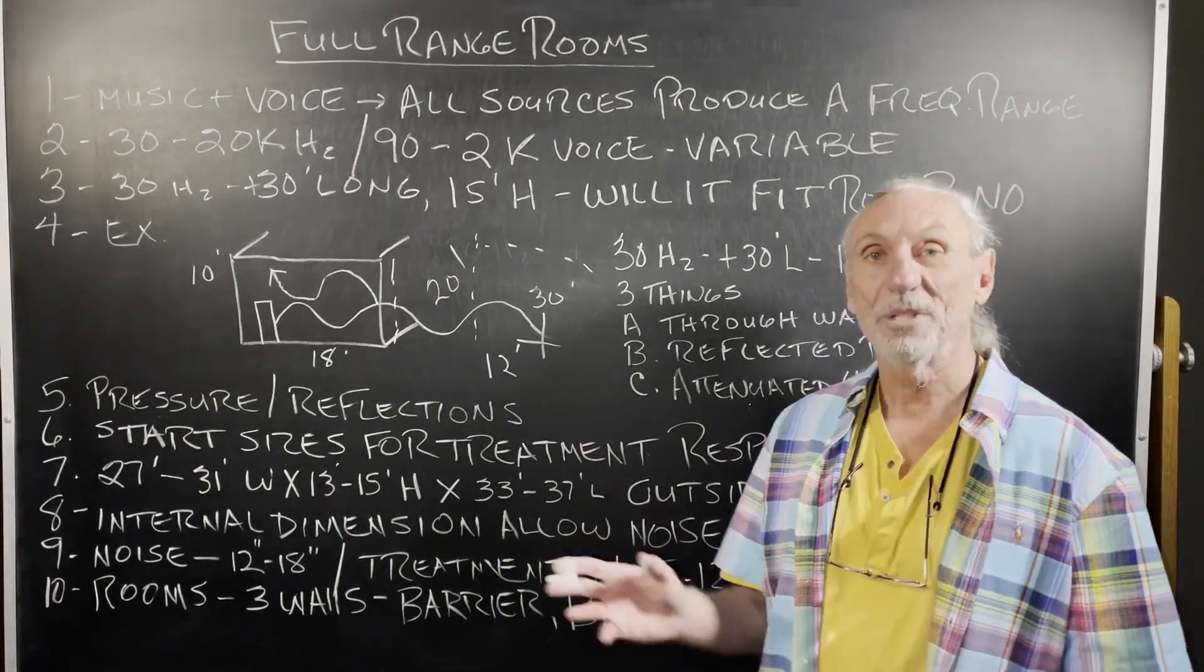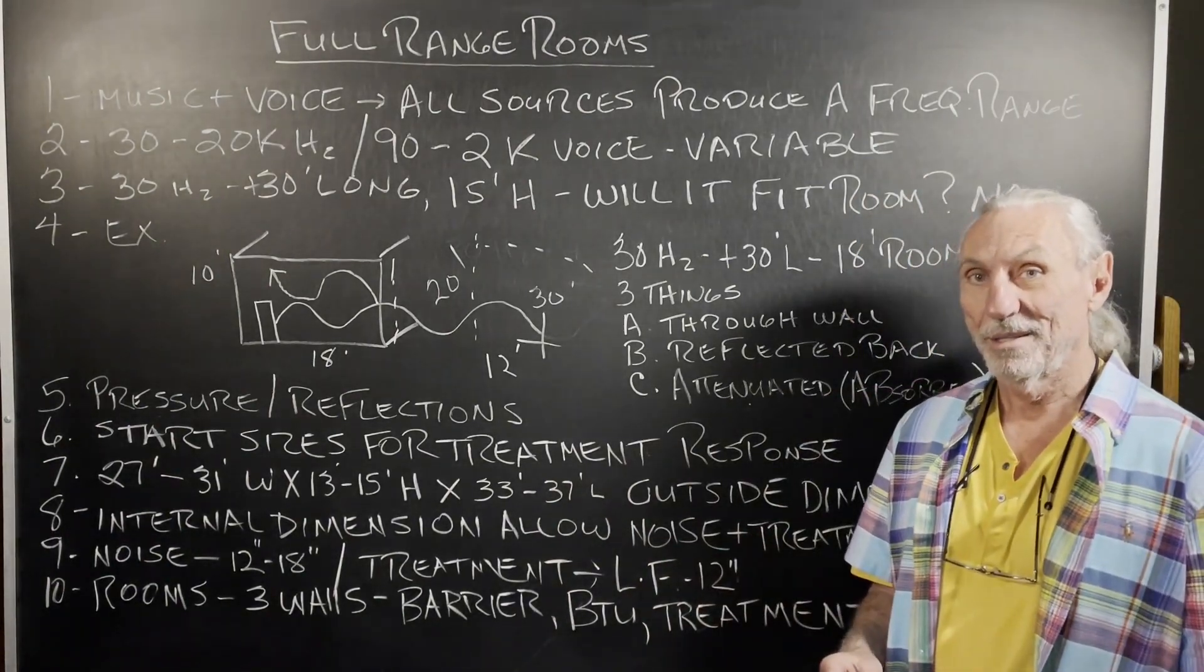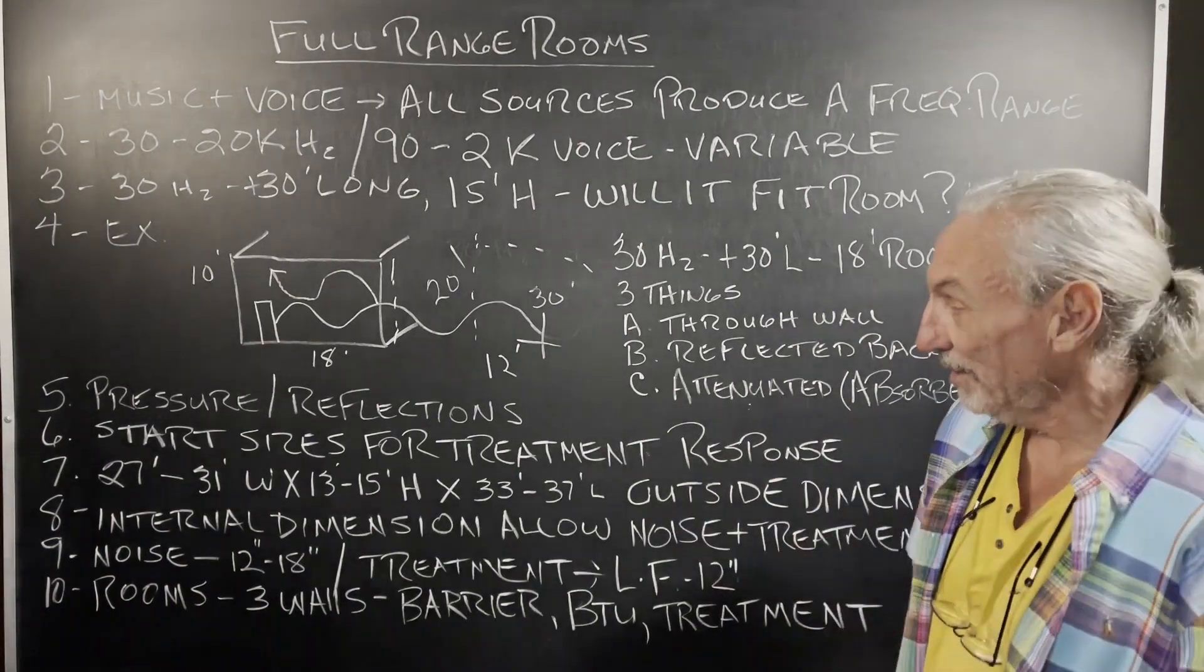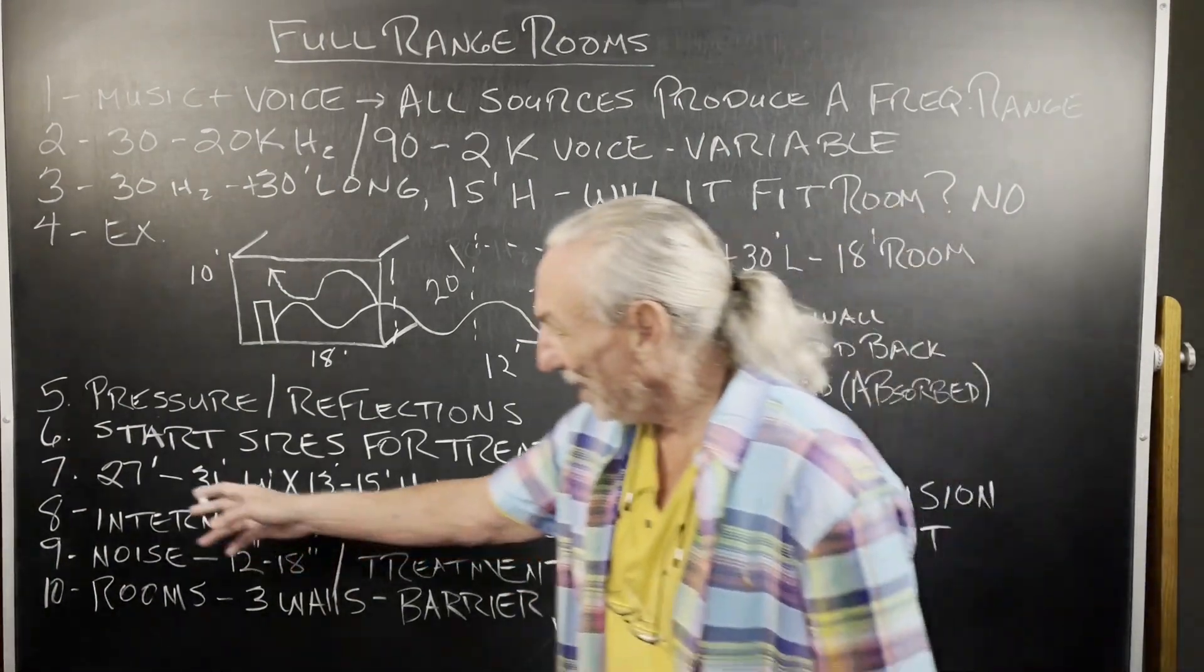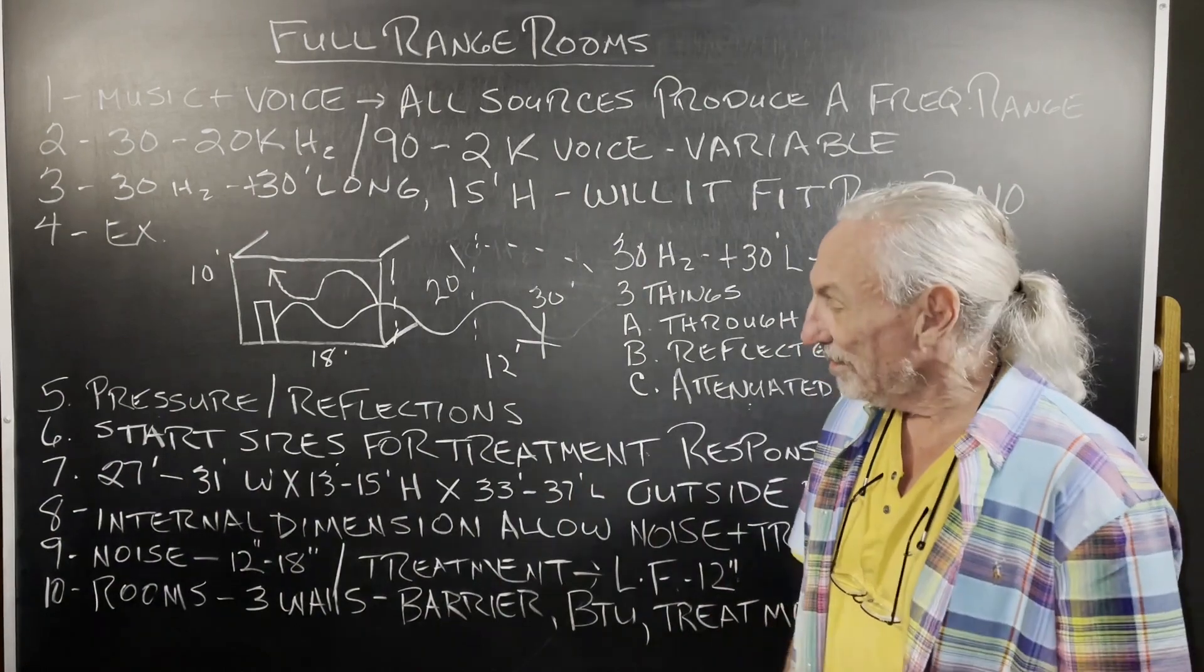So, what are some start sizes that we can use? Well, they're big. Because we have to take into consideration three walls. And let's talk about that. So, we have an outside dimension. Here's what we like to give clients that are building new projects. 27 to 31 wide, 13 to 15 high, 33 to 37 long. Big.